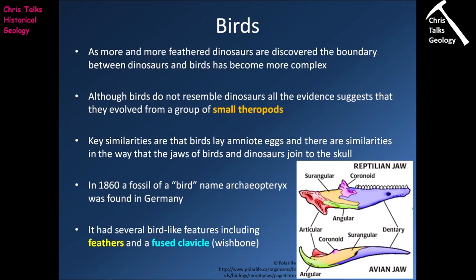Now we're going to move on to the birds. As more and more feathered dinosaurs are discovered, the boundary between the dinosaurs and the birds has actually become more complex. As we get more data, it's a bit more difficult to work out where the dinosaurs stop and the birds begin. Although birds do not resemble dinosaurs, all the evidence we have suggests that they evolved from a group of small theropods.